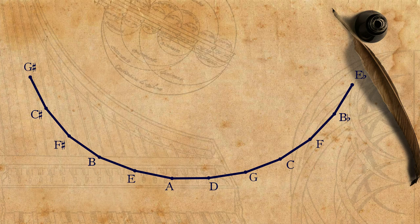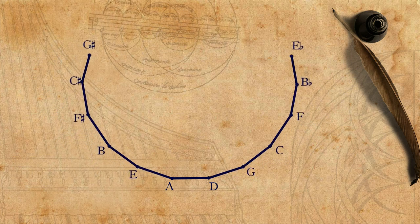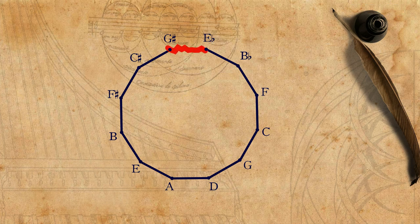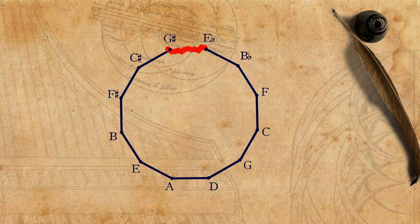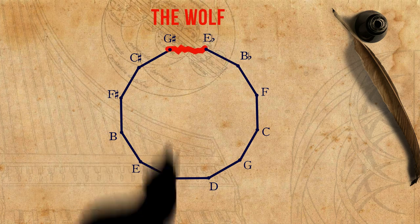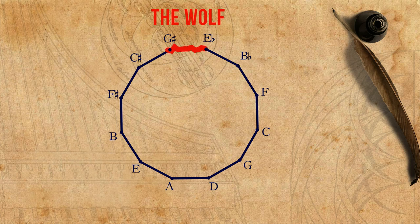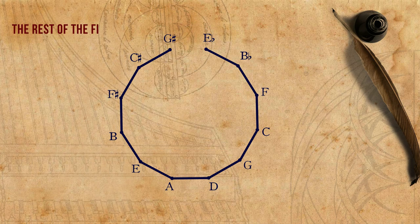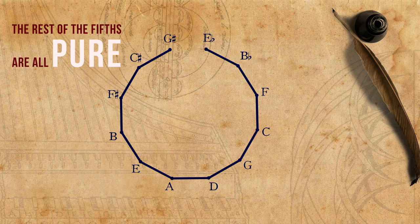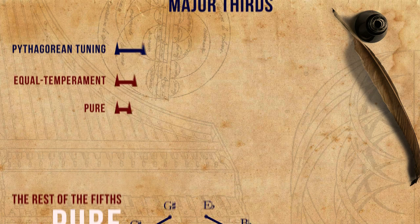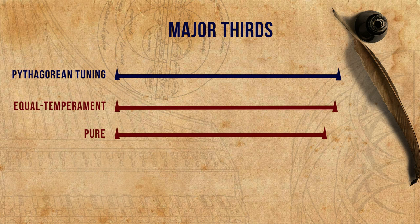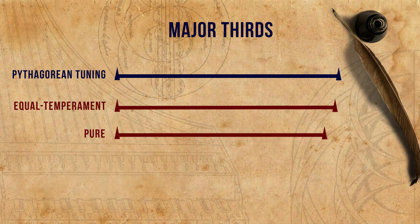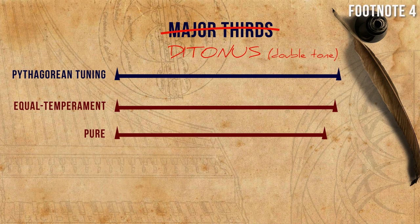With time, when 12 pitches per octave became common, the two ends of the tuning were sometimes placed on G-sharp and E-flat — two notes that were not meant to be played together. In later theories, this extremely impure, excessively large interval was called the wolf. It doesn't matter that it doesn't sound good; it's like a hidden dark place in your house not meant to be seen by anyone. The rest of the fifths are all pure, which is great, but the resulting major thirds are very much larger than pure major thirds. In fact, since they are so different from pure major thirds, in some sources they are called a ditonus — a double tone.